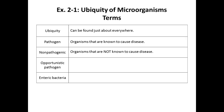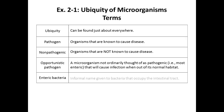Opportunistic pathogens need the right conditions to be harmful — they're only 'bad guys' when the opportunity arises. The most common opportunistic pathogens are called enteric bacteria — an informal name for the microbes in our intestines. E. coli is the most familiar example.